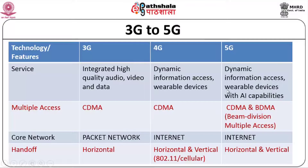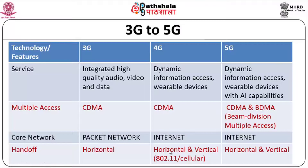Multiple access technology is predominantly CDMA in 3G and 4G. 5G is expected to use CDMA and BDMA — Beam Division Multiple Access — dividing the beam into different areas. The core network in 3G is a packet network; 4G and 5G will work on the internet. Handoff in 3G is horizontal only. In 4G and 5G, both horizontal and vertical handoffs are supported — vertical meaning you can transition from an 802.11 network to a cellular network seamlessly.